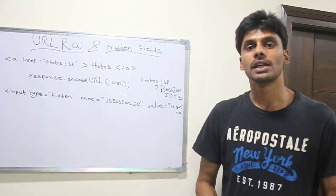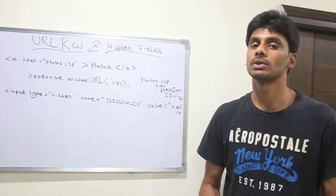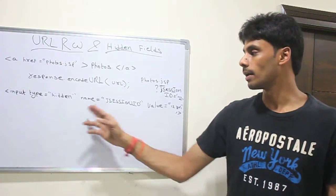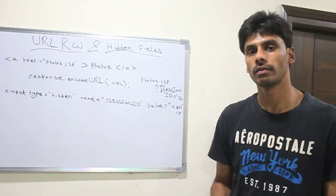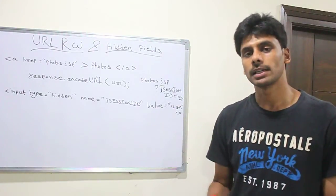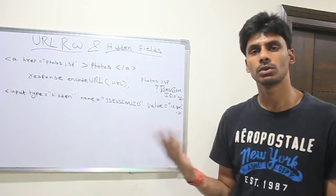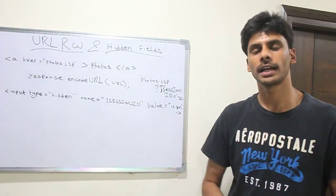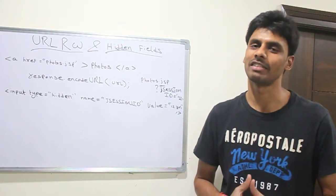Then the last way is to use hidden fields. When you are using forms in your web page, you will use a hidden field which when clicked, when the submit button is clicked, the J session ID will be sent. Again, the user will not see this, but the server will get it back, that's the beauty of the hidden fields.